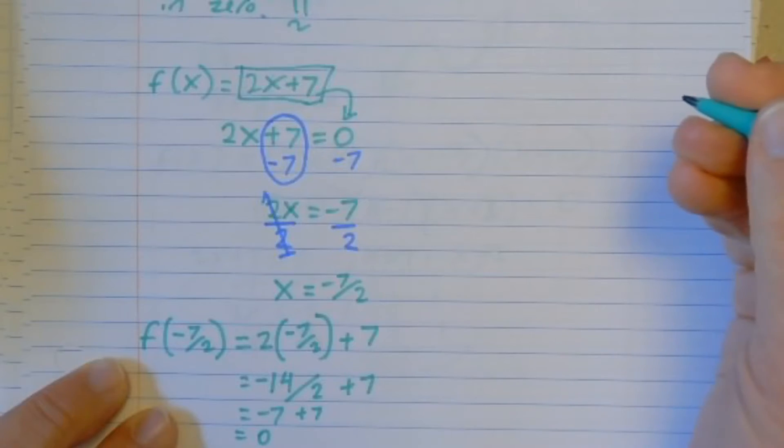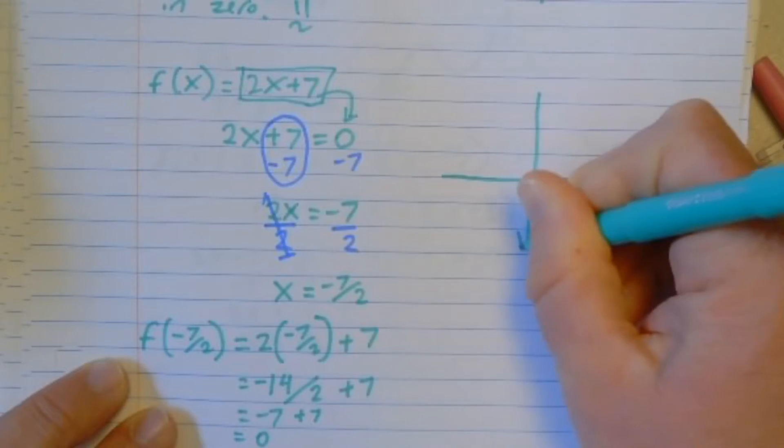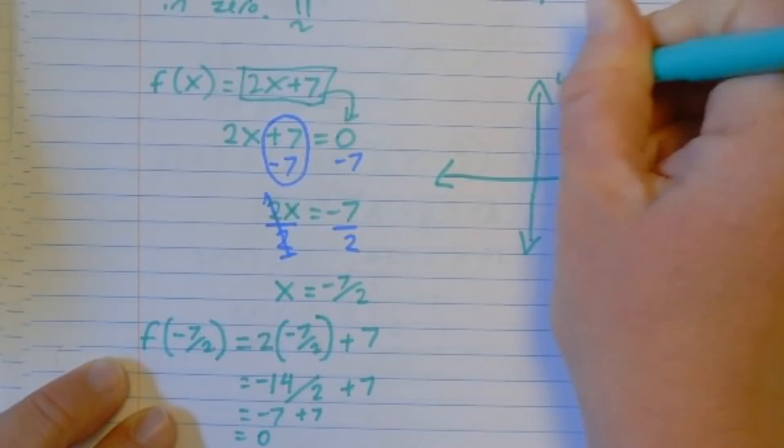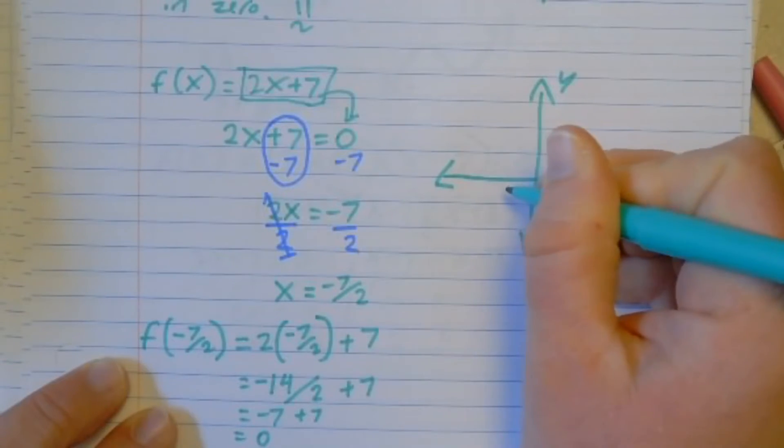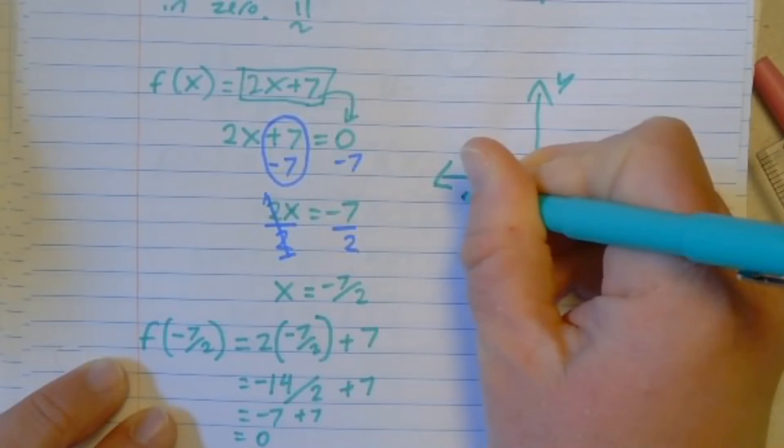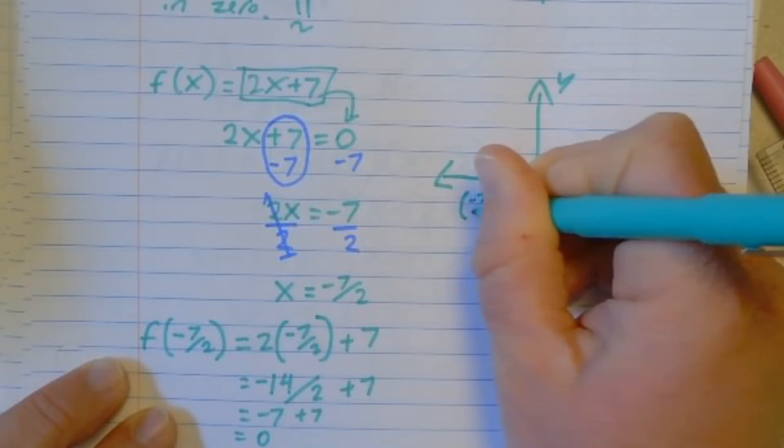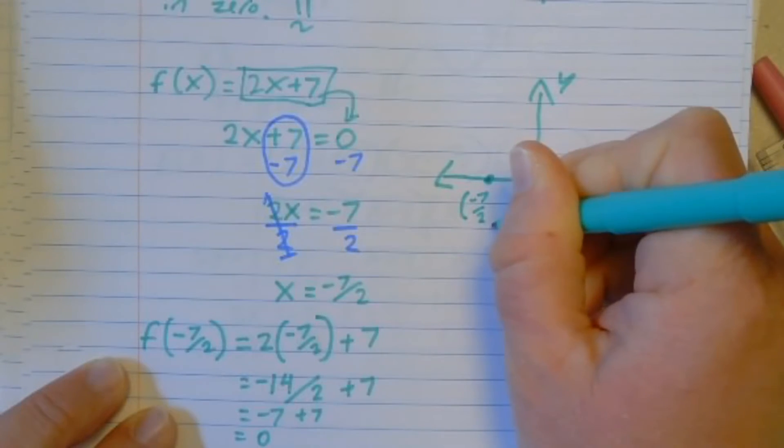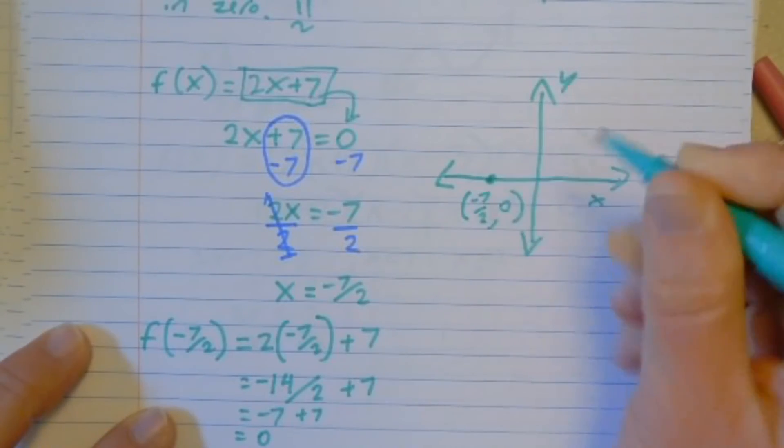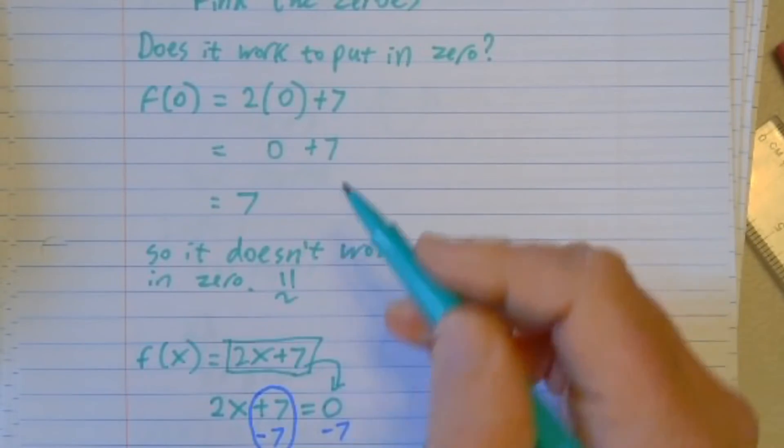And what this means is, if I were to graph this function on a little coordinate plane like this, here's my x, here's my y, negative 7 halves, which is negative 3 and a half, which is about here. And this point would be negative 7 halves on the x and 0 on the y.